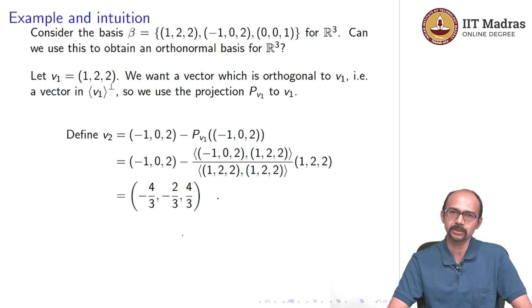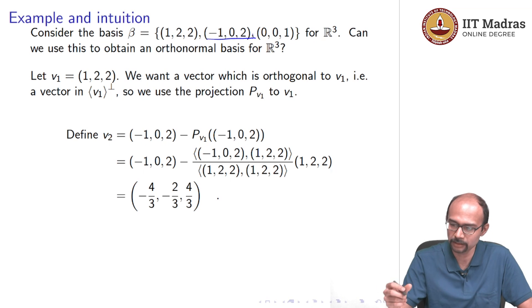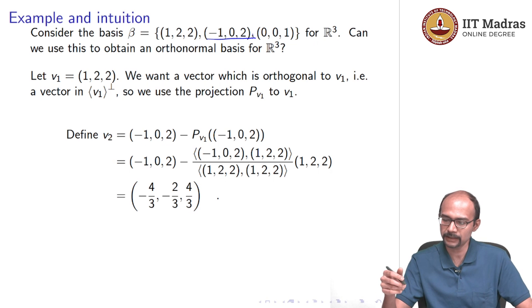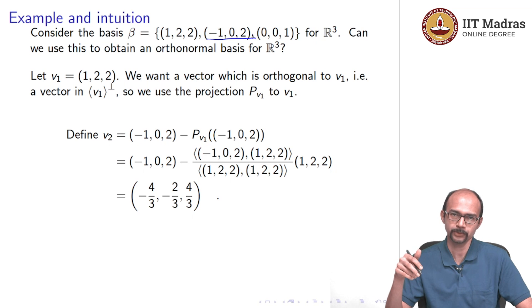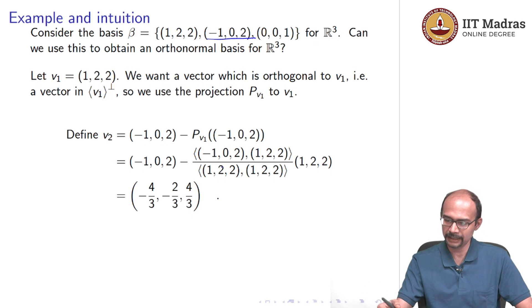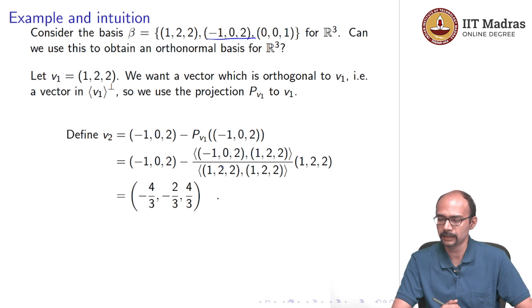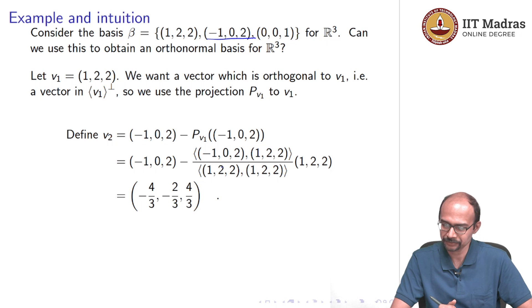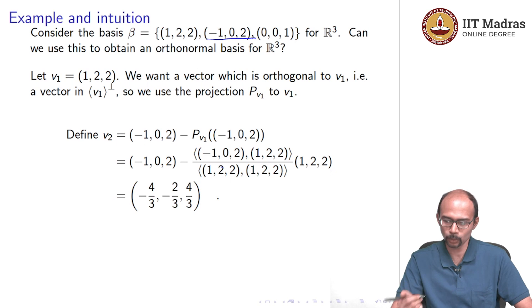Define V2 to be: take the second basis vector (-1, 0, 2) and subtract the projection of (-1, 0, 2) onto V1. The projection P_V1 of (-1, 0, 2) is a scalar multiple of V1, where the scalar is the inner product of (-1, 0, 2) with (1, 2, 2) divided by the norm squared of (1, 2, 2). The numerator is -1 + 0 + 4 = 3, and the denominator is 1 + 4 + 4 = 9, so the scalar is 1/3. This gives V2 = (-1, 0, 2) - (1/3)(1, 2, 2) = (-4/3, -2/3, 4/3).